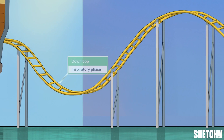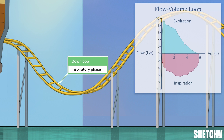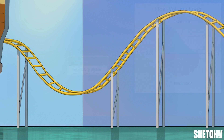The rest phase is followed by the inspiratory phase, which is the process of taking air into the lungs. The inspiratory phase on a flow-volume loop actually has a down-loop, or down-going curve, so it's no accident we've represented the inspiratory phase with this down-looping portion of the track.